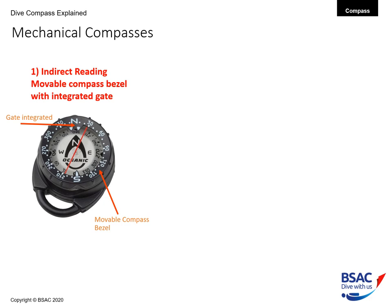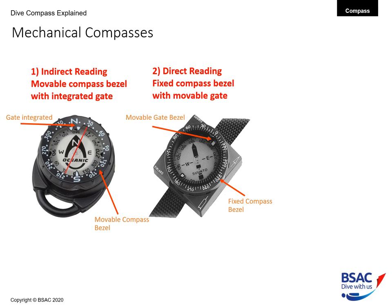Mechanical compasses come in two types. The first is an indirect reading compass, which has a moveable compass bezel with an integrated gate. The second is a direct reading compass, which has a fixed compass bezel with a moveable gate. We call it a direct reading compass because the needle always points directly to the direction of travel. In this example, the lubber line is pointing at approximately 60 degrees, read directly from where the compass needle is pointing, and you don't really need to use the gate — it is simply an aide-memoire.